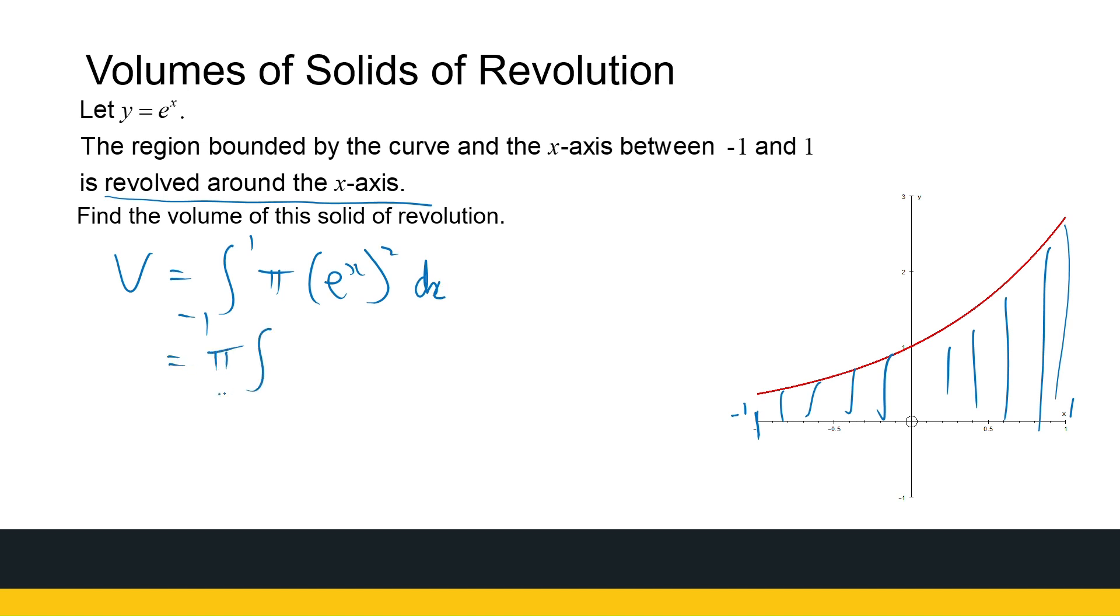So that is pi can come out. That's minus 1 to 1 e to the power 2X dx. Now you should, at this stage, know how to find the antiderivative e to the power 2X. That's pi times a half e to the power 2X between 1 and minus 1. So that's pi times, if I substitute 1 in, I've got a half e squared minus a half e to the power minus 2. You can rewrite this as pi over 2 e squared minus e to the power minus 2, but we don't need to take it any further. That's the exact value of the volume of that revolution.